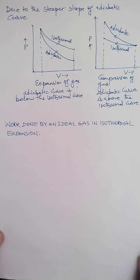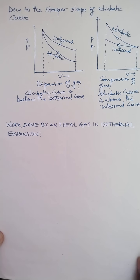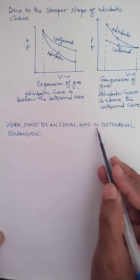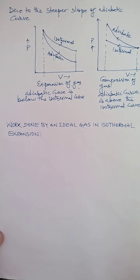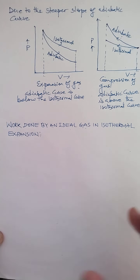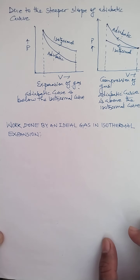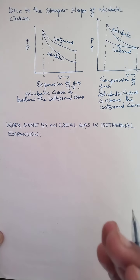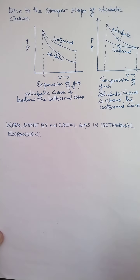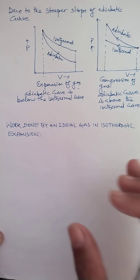My dear children of class 11 science, we will now derive an expression of work done by an ideal gas in isothermal expansion. In isothermal process, the gas can be expanded or compressed. Whenever there is an expansion or compression of gas in isothermal expansion, work is done by the gas or work is done on the gas — meaning work is done by the system or work is done on the system.